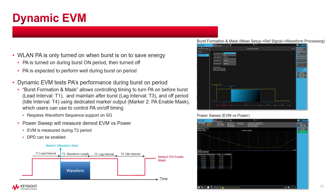The N9055EM0E XLPA measurement application provides setup and control as shown in this timing diagram. T1, T3, and T4 are required to be set, and then a PA-enable mask is built and routed to the MK2 source of the instrument, which is used to control PA power on and off. For example, the actual EVM measurement is performed only in the T2 duration, which is the same as standard EVM measurement.